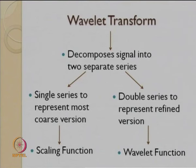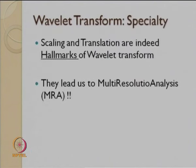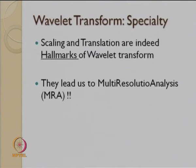We saw in the last lecture that wavelet transform essentially decomposes a signal into two separate series: a single series to represent the approximations, leading us to the scaling function also known as the father function, and a double series to represent the details, leading us to the wavelet function or the mother wavelet. We also looked at the speciality of wavelet transform — scaling, translation, and dilation together are the hallmarks of wavelet transform, leading us to multi-resolution analysis, or MRA.